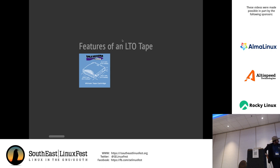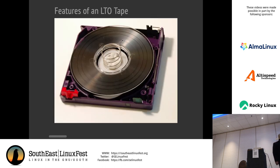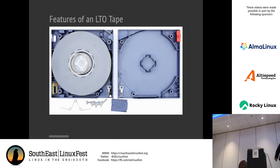LTO tapes are about four inches by four inches and about an inch tall. I've got one popped in red in the tape drive over there. Inside: that big spool is the tape, there's a little leader pin at the front that spools up into the drive, and there's a little RFID chip that stores data about the tape — how many times it's been inserted and more — which the drive reads and rewrites.